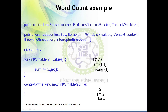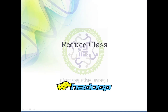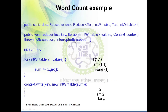FileInputFormat.addInputPath sets the path of the input test file. In this example, the test file contains the line 'I am Nisarga am I'. FileOutputFormat.setOutputPath specifies the output file — in this case 'out998' — where the results will be stored. Finally, we submit this job to Hadoop to process it across the clusters.